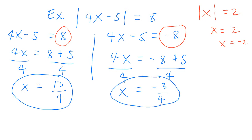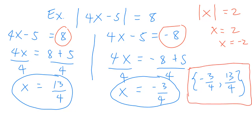Looking at our absolute value equation, you can always check by plugging the answers back into the original equation. Both answers are true. The solution set is negative 3/4 and 13/4. Again, you can always verify by substituting back into the original equation.